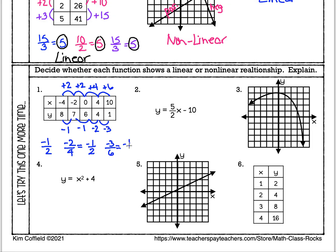All of these rates of change are the same — they all reduce to negative one half. Even though the numbers in the table were a bit different at times, they all reduce to the same thing. So this table is actually linear because it has a constant rate of change. This one is linear.